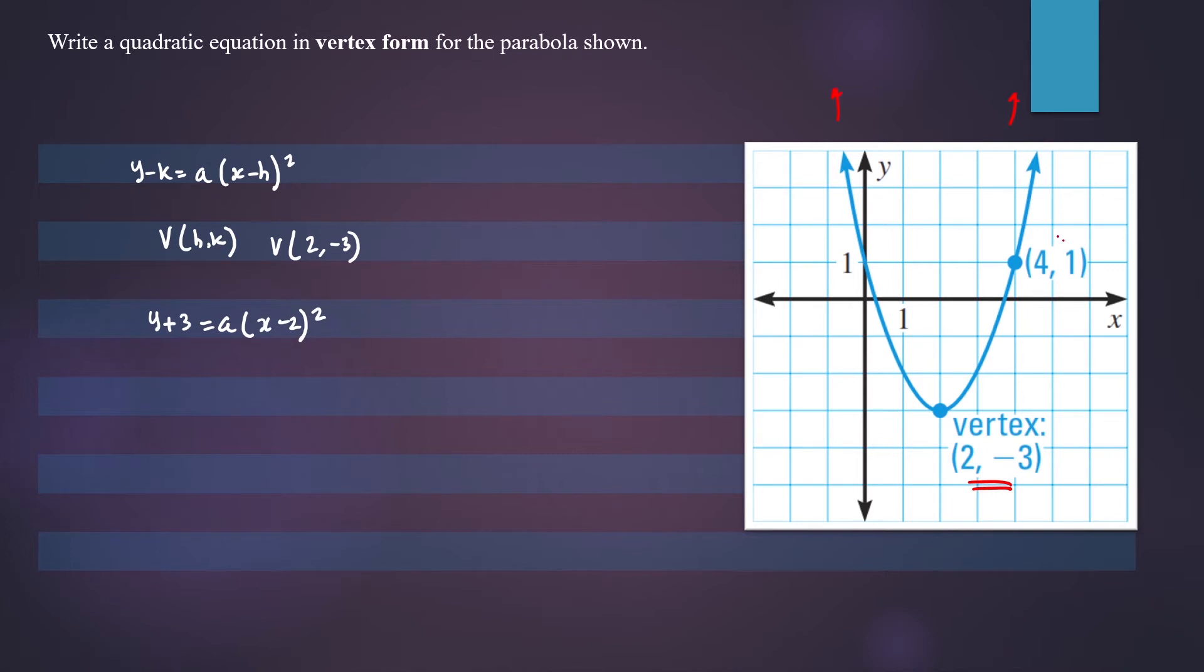We also note that the ordered pair (4, 1) is on the graph. So we can use those numbers to calculate a. We'll let these equal x and y, and we'll substitute these two numbers into our standard form.